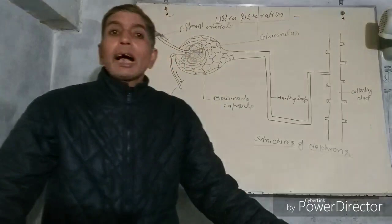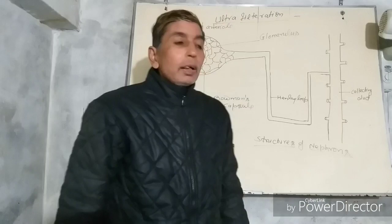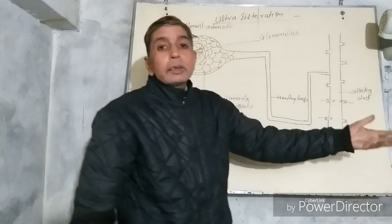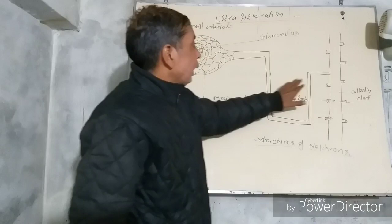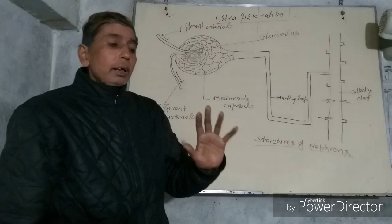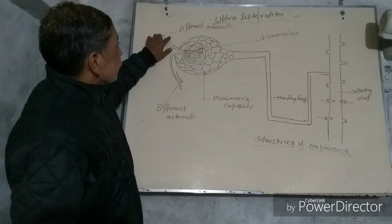Nephrons are called urinary tubules. The broader tubes are called collecting ducts. Many nephrons open within the collecting ducts. The collecting ducts transfer the filtrate into the urinary system. I am describing only one nephron and how it filters — the filtration system is the same for all nephrons. The arterioles transfer blood to the urinary tubules.